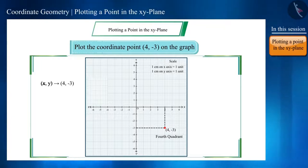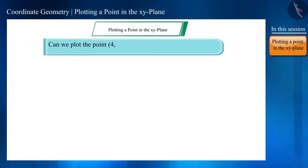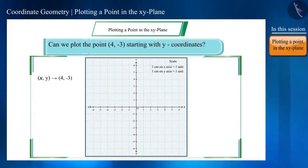Friends, here you can see that we started with the X coordinate. Could we plot this point if we had started with the Y coordinate? Let's see. The Y coordinate is minus 3, so we will find the number minus 3 on the Y axis and then draw a perpendicular to the Y axis from the same point or say draw a line parallel to the X axis.